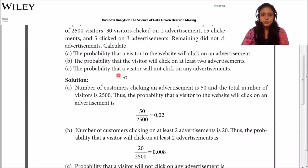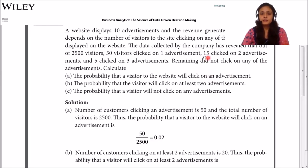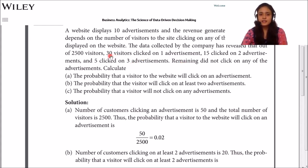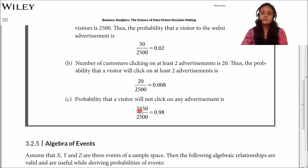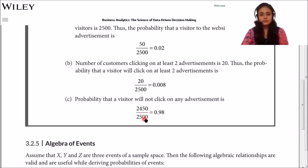The third probability is that a visitor will not click on any advertisement. The total visitors who clicked is 30 plus 15 plus 5, which is 50. So visitors who did not click equals 2,500 minus 50, which is 2,450. Dividing by the total observations: 2,450 divided by 2,500 gives a probability of 0.98. So 98% of visitors do not click on any advertisement.